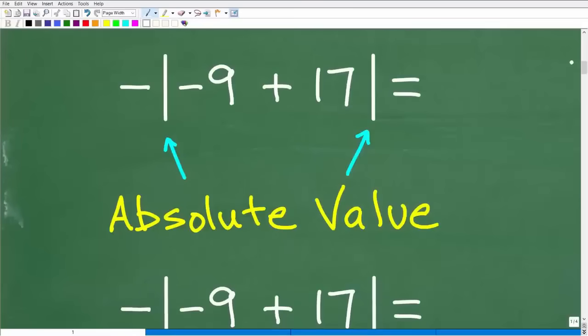Okay, so first things first. We have to recognize what kind of problem we're dealing with. Okay, so these bars, these are vertical bars. This indicates absolute value. Okay, so that's what we call this in mathematics.